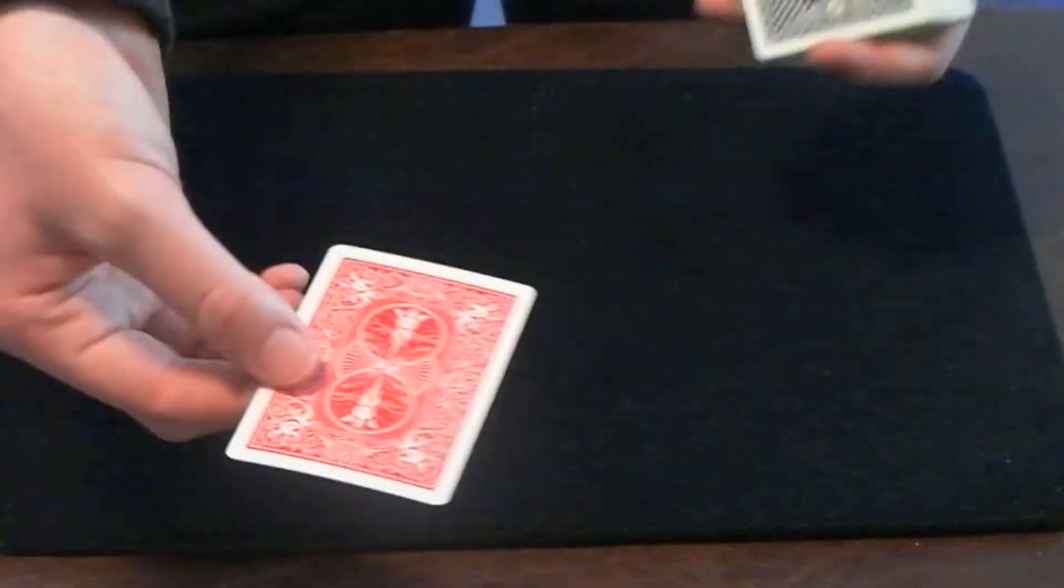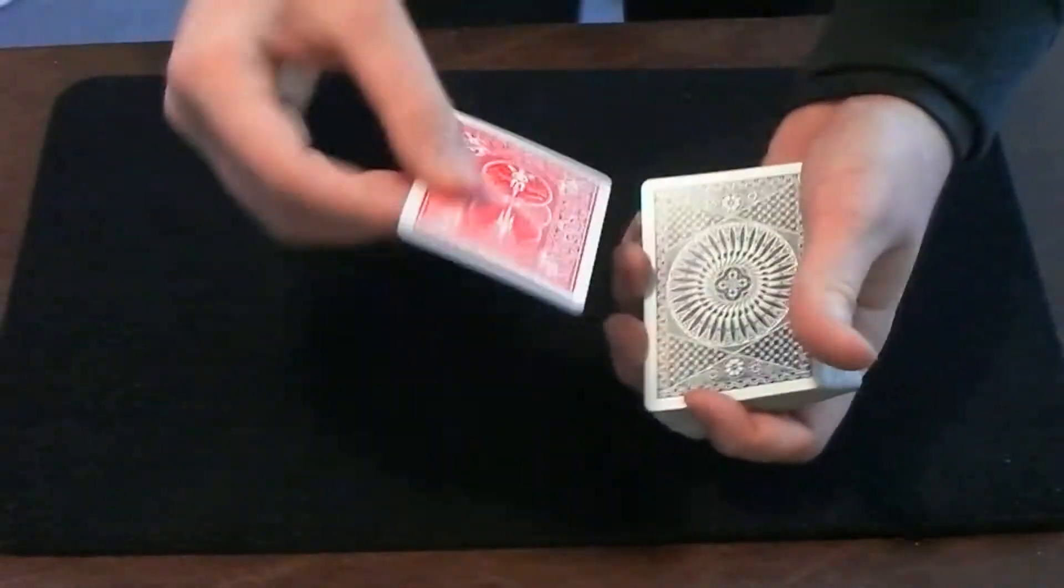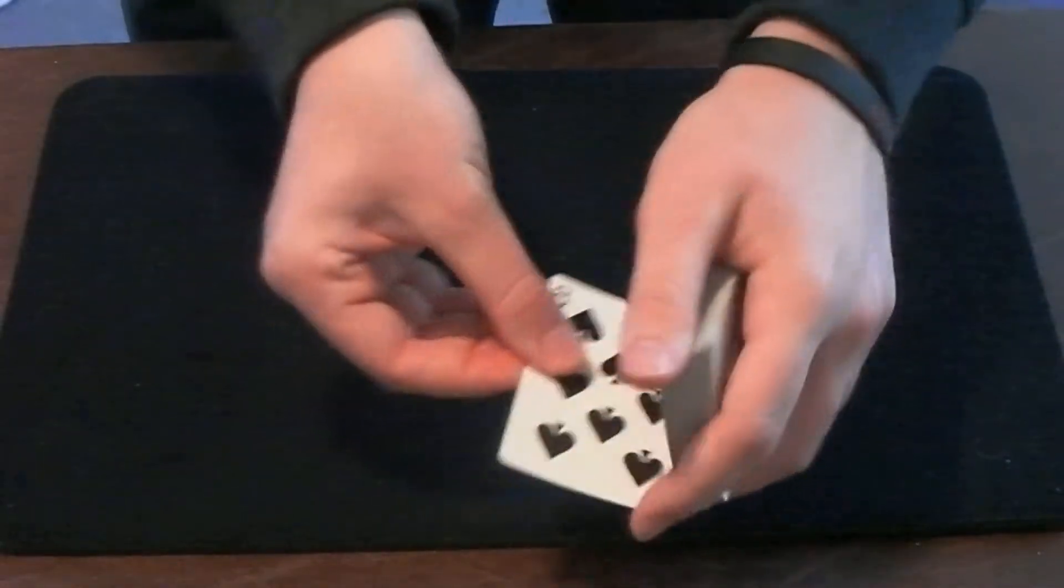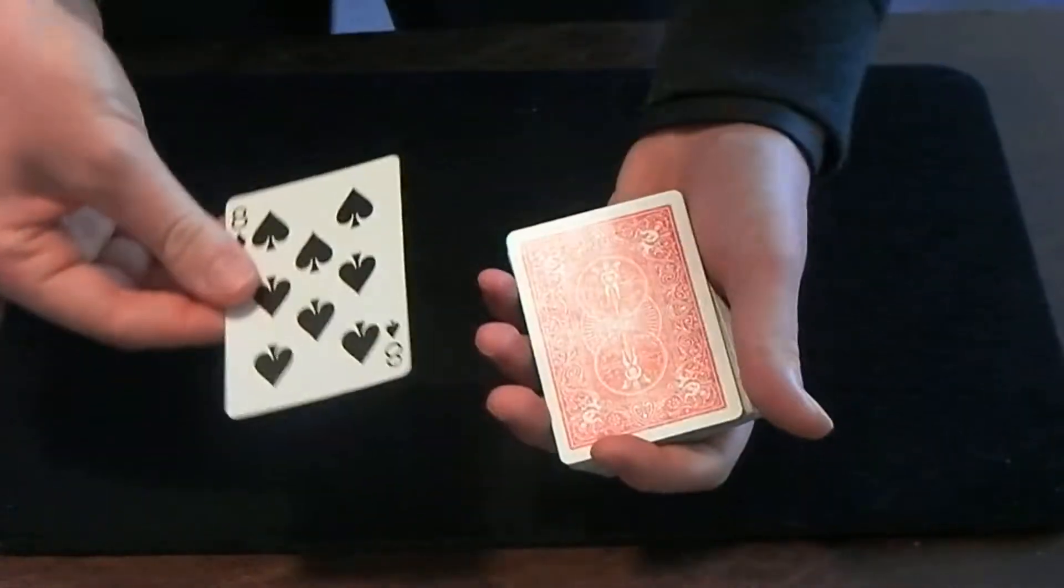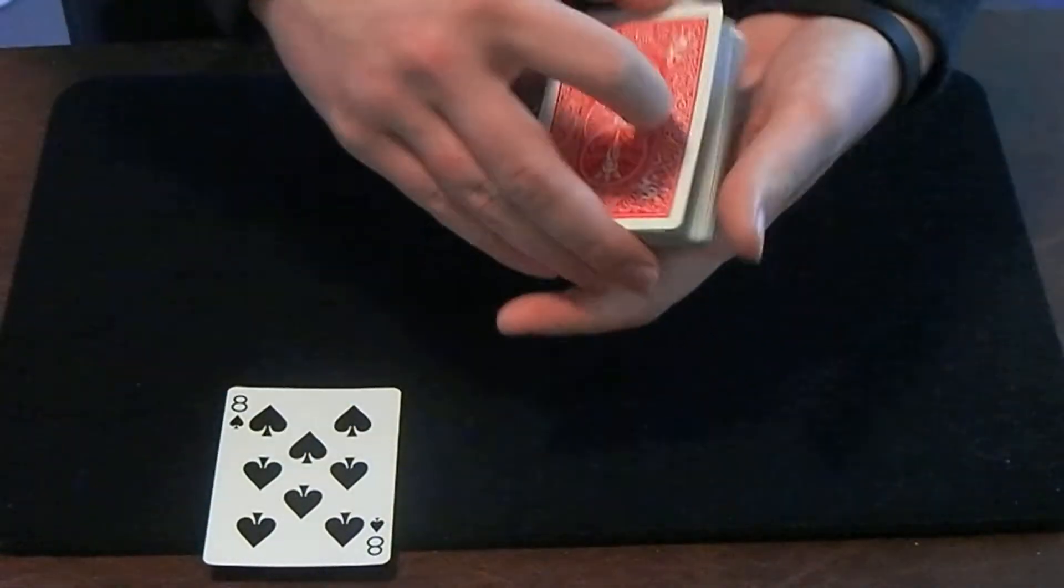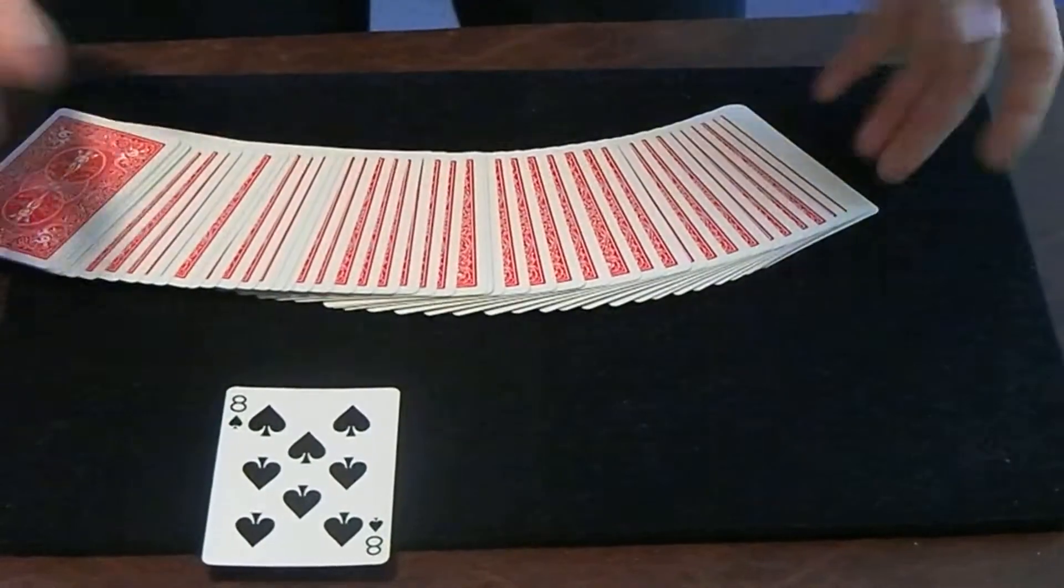But there's something even better about the eight of spades that I can show you. If I just take the eight of spades like this and give it a little paint stroke on the deck, all the cards in the deck turn red.